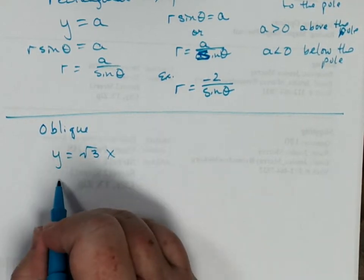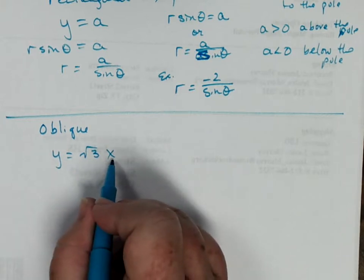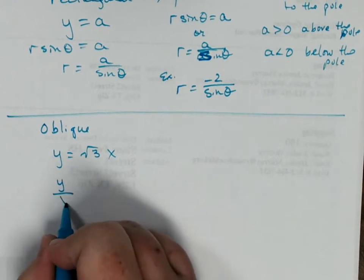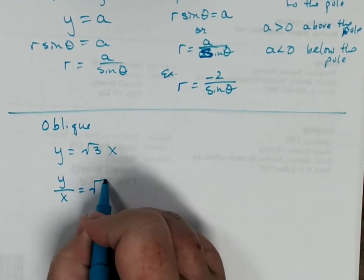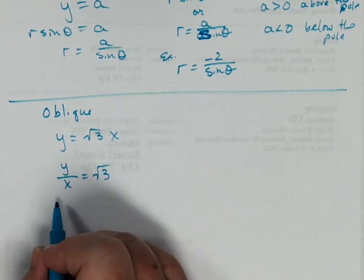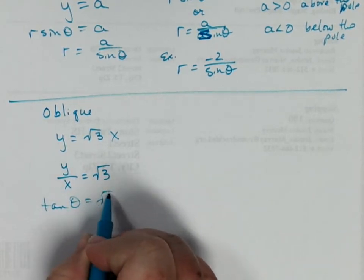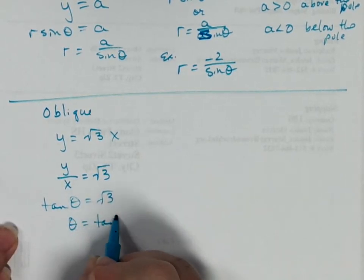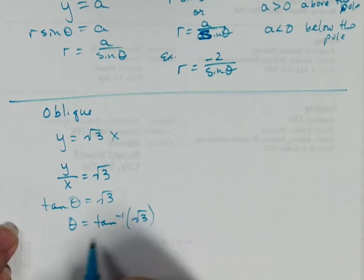In this particular line, remember that if I were to divide both sides by x, because if x is not 0, so y divided by x equals root 3, then I can replace y divided by x with tangent of theta. And if tangent of theta is root 3, then theta is the inverse tangent of root 3, and theta is pi over 3.